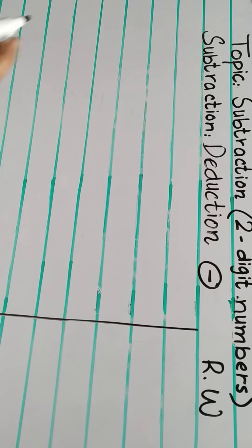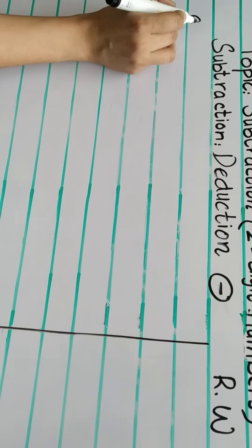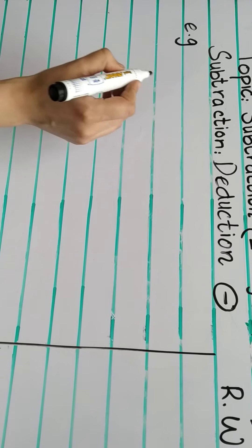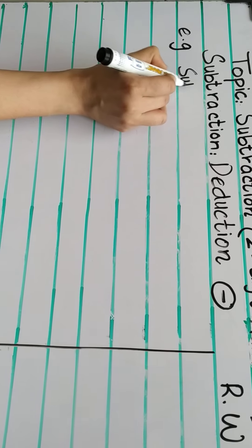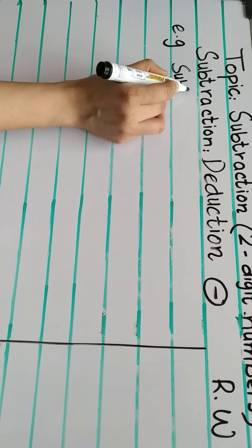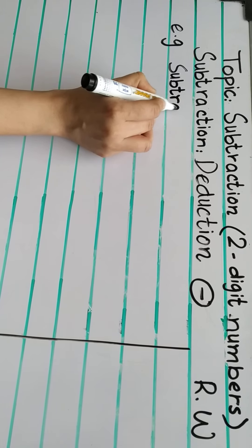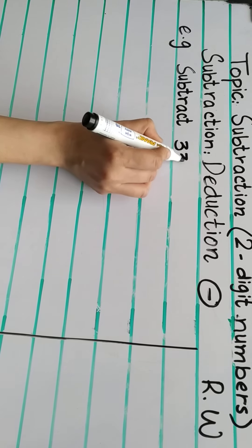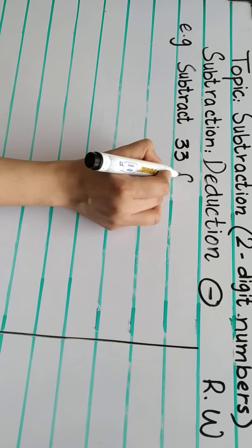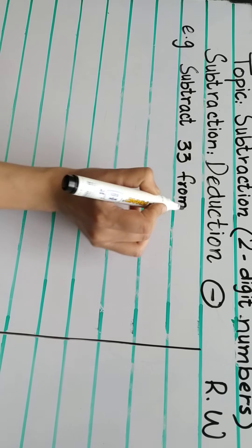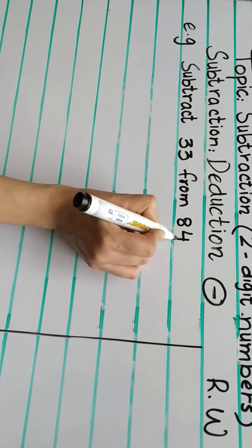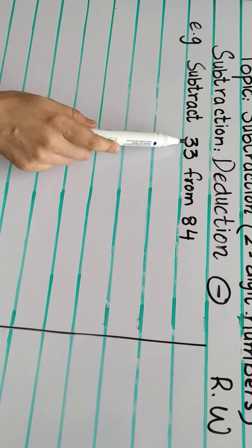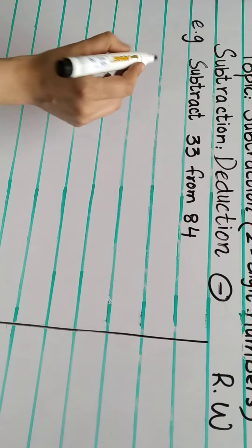Let's do some examples. Subtract 33 from 84. We will subtract 33 from 84.